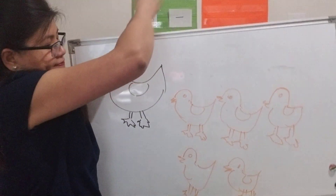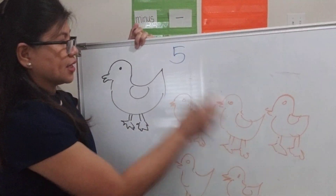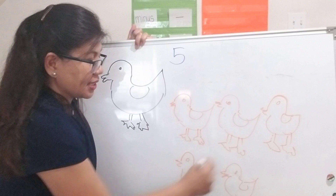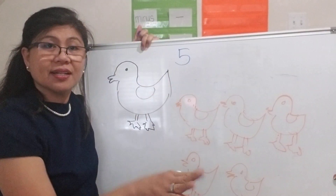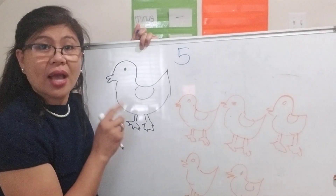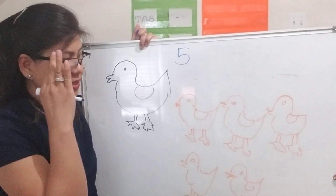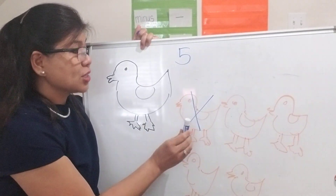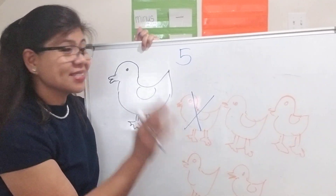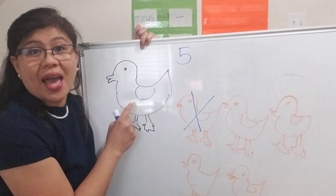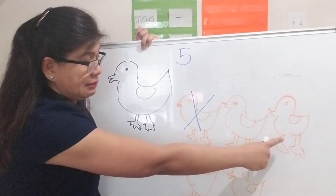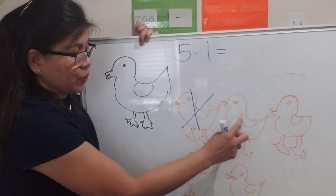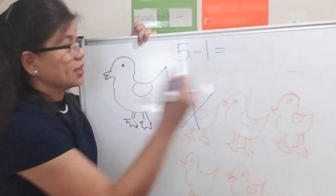So this is the number of ducklings that mama duck has. Five little ducks went out to play over the hills and far away. Mother duck said quack, quack, quack, quack — but only four little ducks came back. Why? Because one duck went away. So five ducklings minus one — how many are left? One, two, three, four — only four ducklings are left.